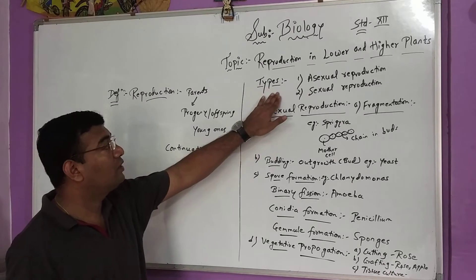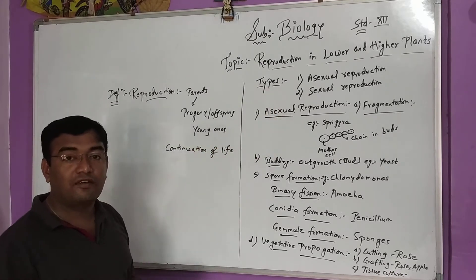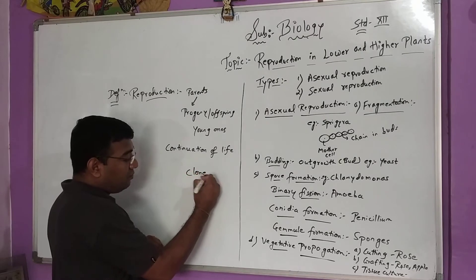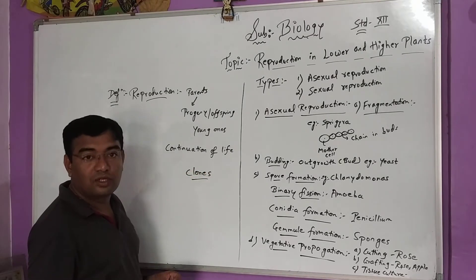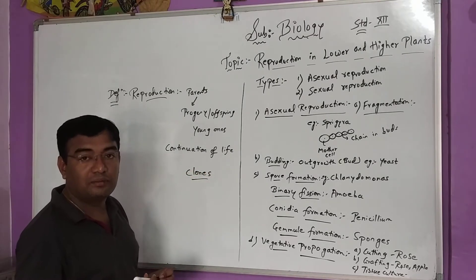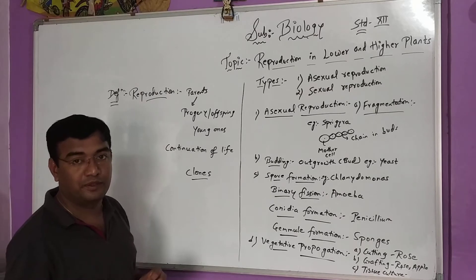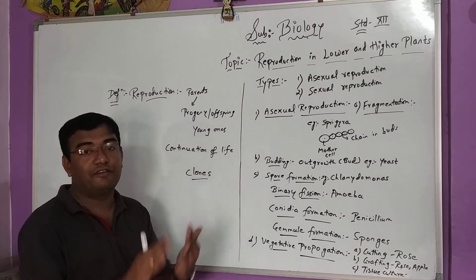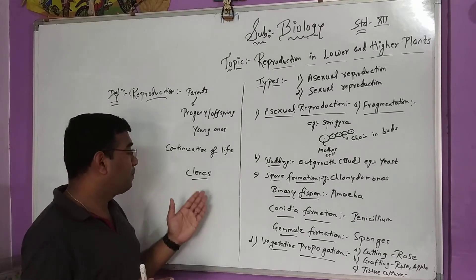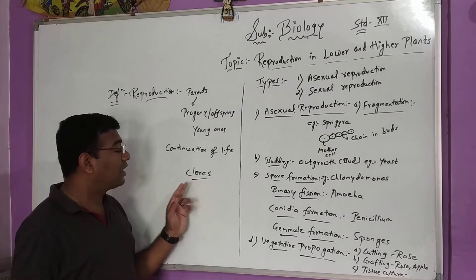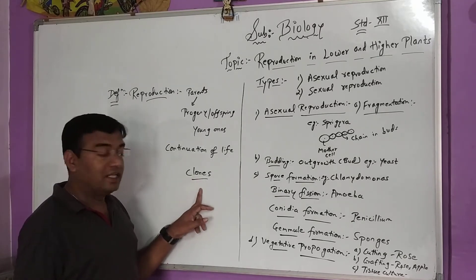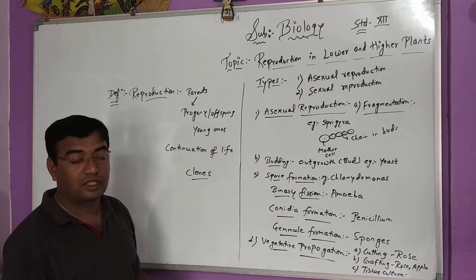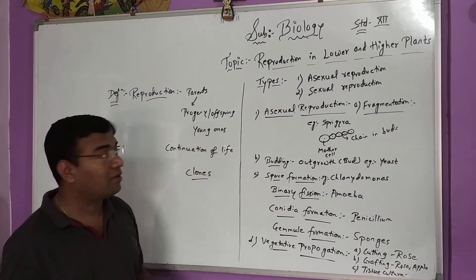Before we move towards the types of reproduction, you might have heard about the concept of clones. What are clones? Clones are nothing but preparation of the same kind of species — like the parents. The same replica can be prepared from the same parents. This is a clone, which is one good example of asexual reproduction, and we will see it later on.